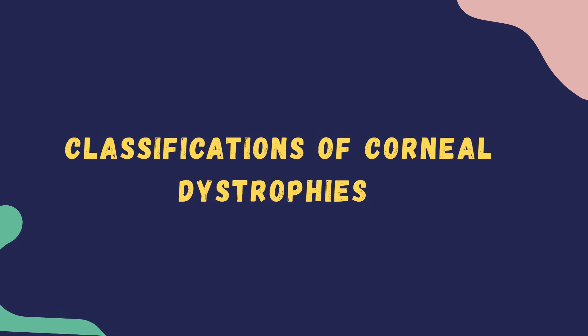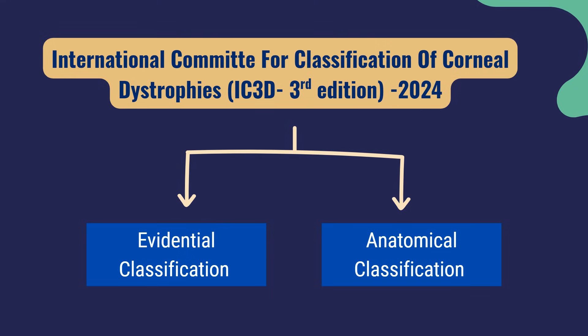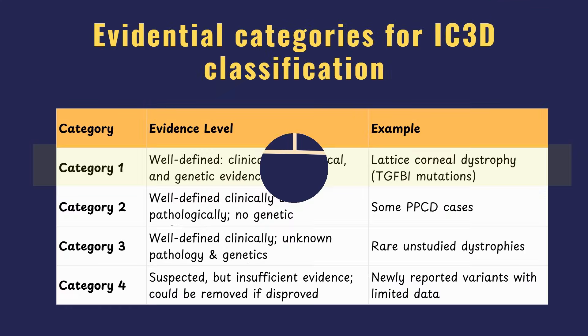Now let's move on to classification. The International Committee for Classification of Corneal Dystrophies, the IC3D, uses two key approaches: the evidential classification, where dystrophies are grouped based on how strong the scientific proof is, and the anatomical classification, where they are grouped by the layer of the cornea affected.